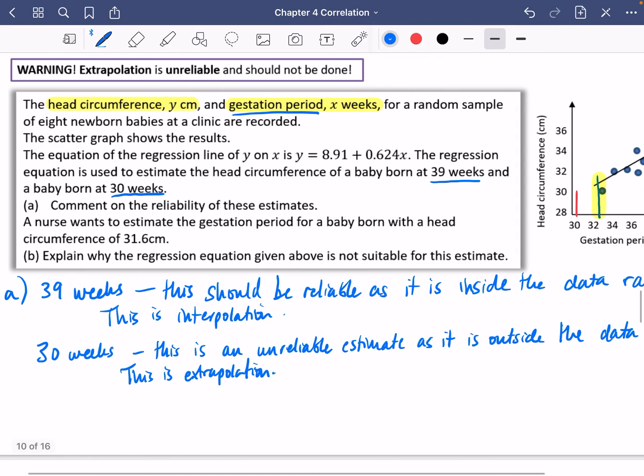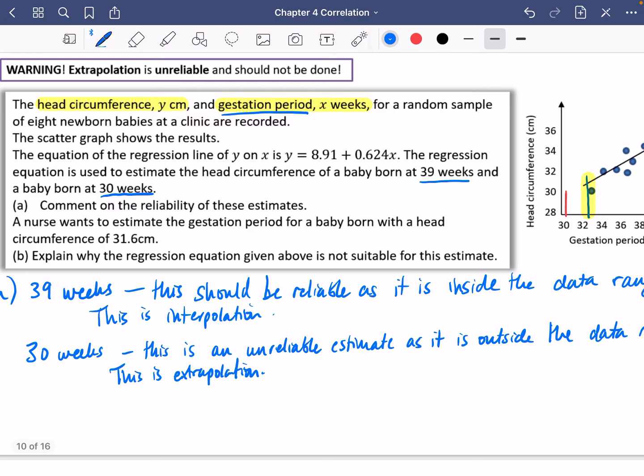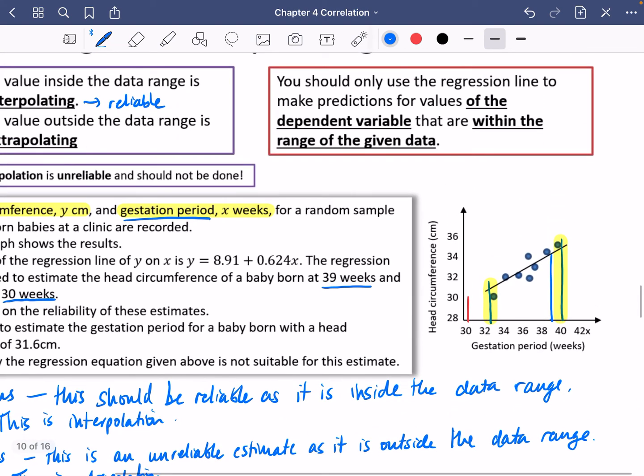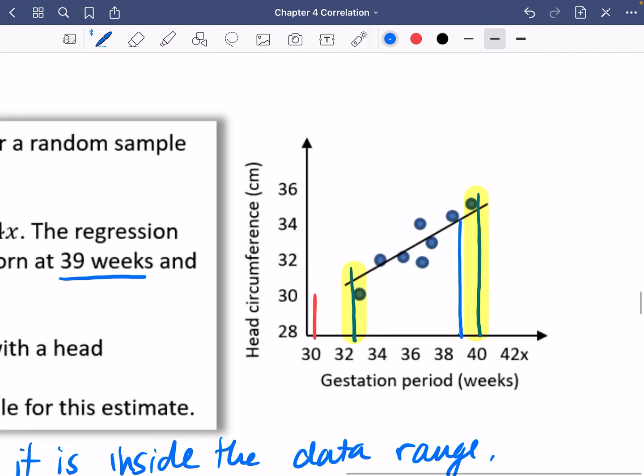Okay, last part here. It says a nurse wants to estimate the gestation period for a baby born with a head circumference of 31.6 cm. Explain why the regression equation given above is not suitable for the estimate. So it's this box we've said here - you should only use the regression line to make predictions for the values of the dependent variable. So this time, the nurse is trying to go from 31.6, which is going to be, I don't know, like over here.